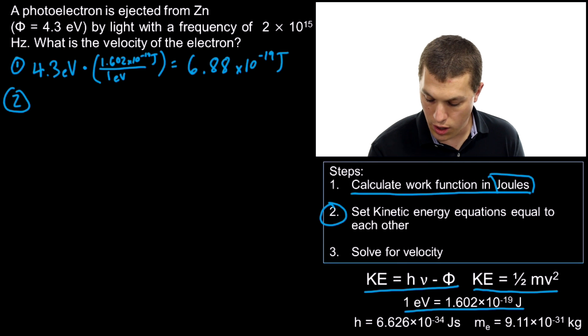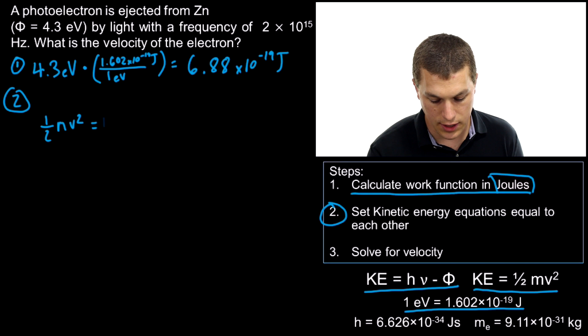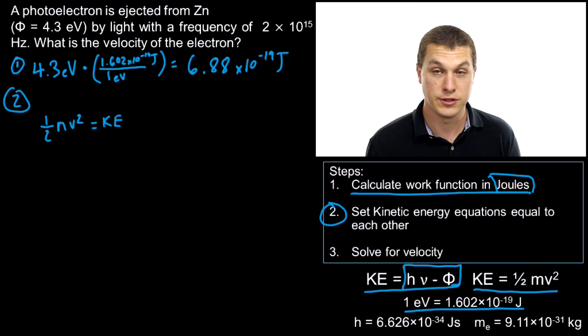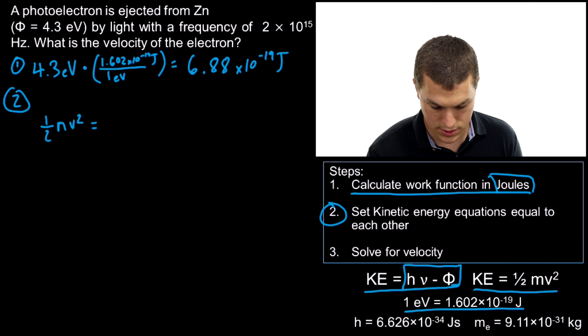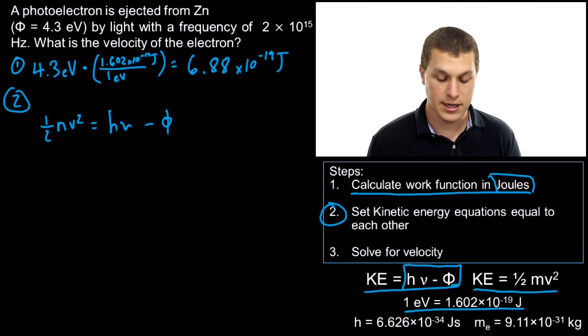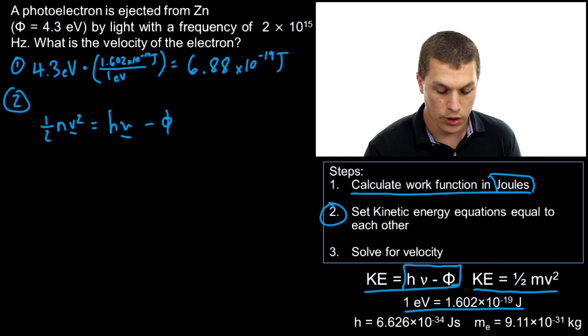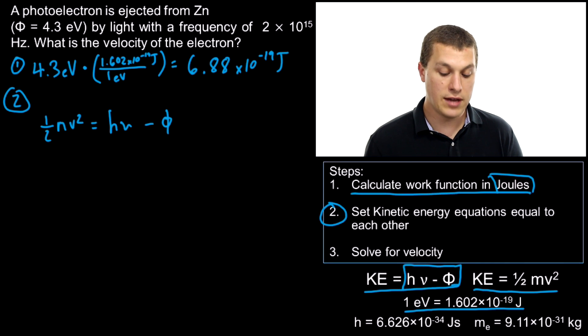Since we know that ½mv² is equal to kinetic energy, we can set ½mv² equal to the other kinetic energy expression through substitution. So instead of writing kinetic energy, we'll write hν - Φ. One thing you've got to keep careful track of here is your v for velocity and your ν for frequency look really similar. You don't want to flip those around. We're trying to solve for velocity.